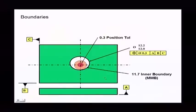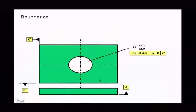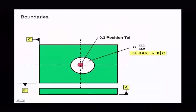Then what could happen is the hole could get larger. Take a look at the hole—it's going to get larger, goes up to 12.2. And it's regardless of feature size, so it could also have position of 0.3. That means it could be here, it could be there, it could be all these different places, but notice it never goes outside of this boundary.